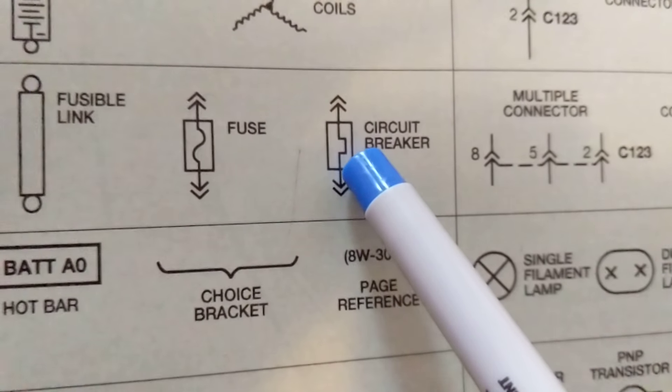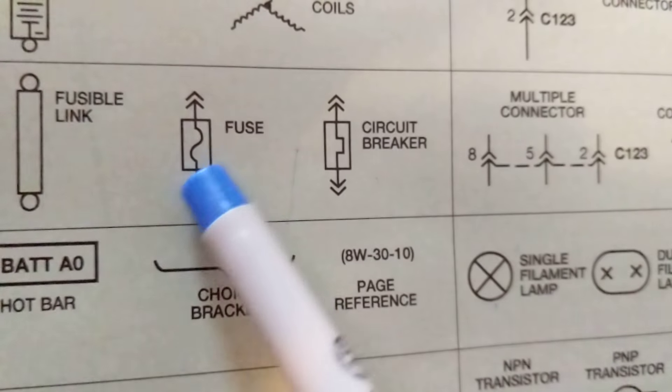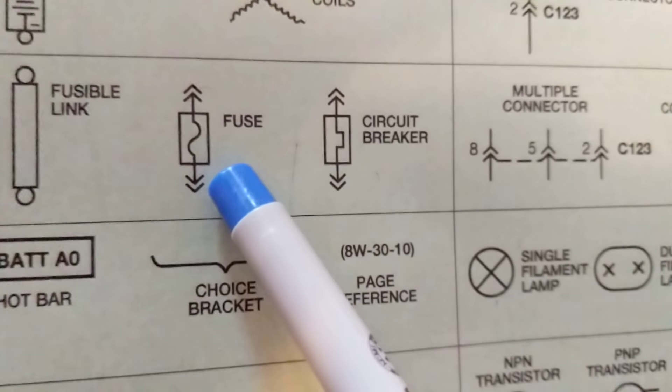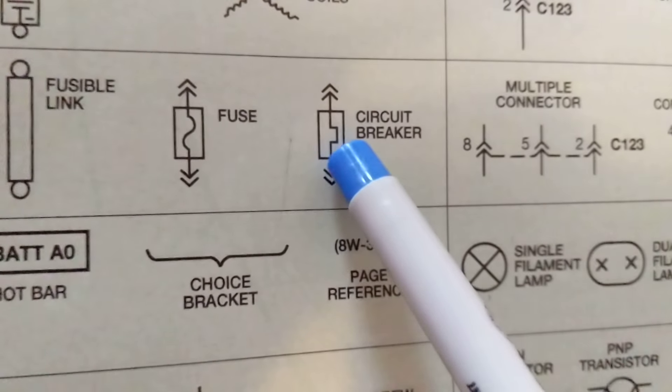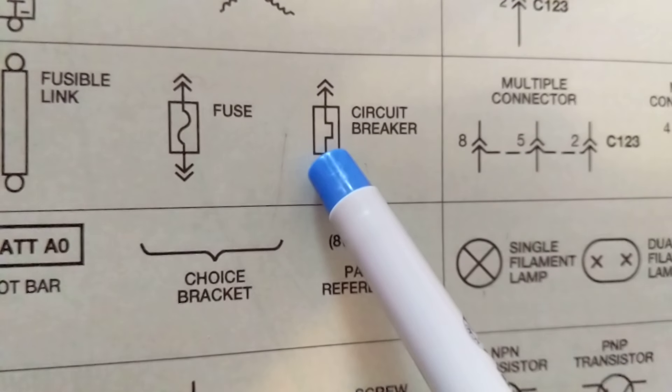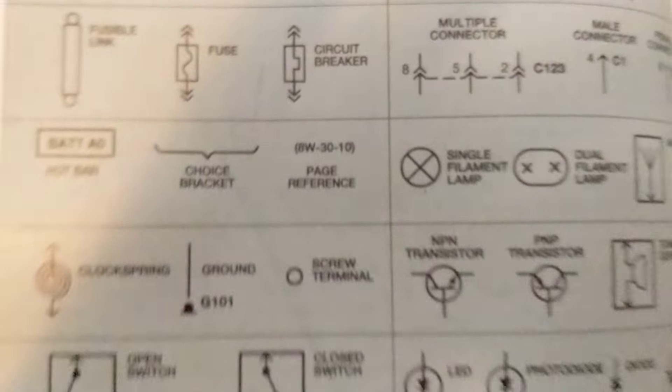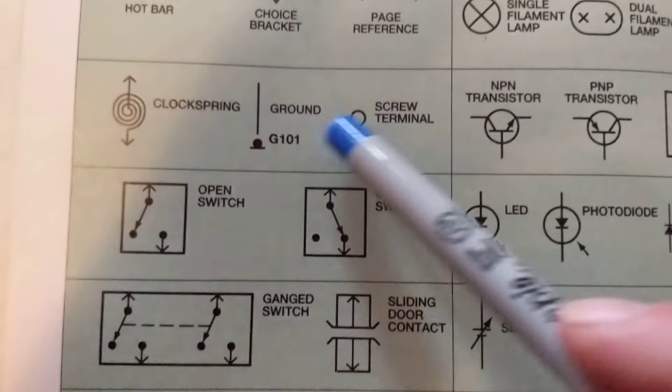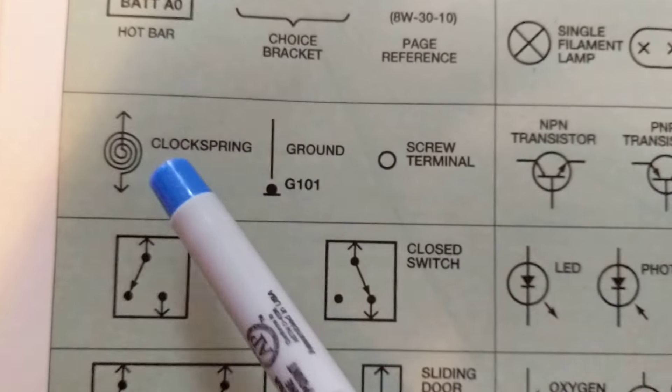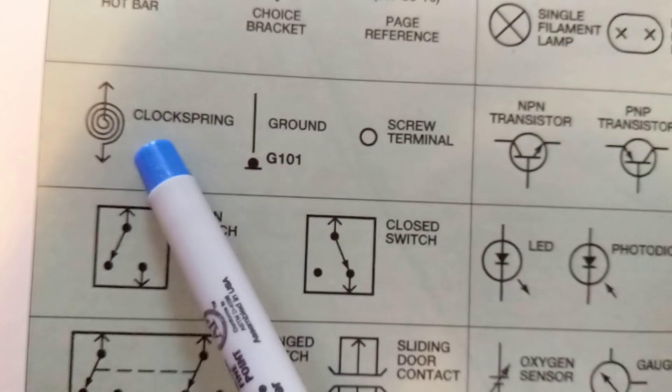And this is a circuit breaker. A fuse once it blows that's it, it goes. Circuit breaker can be reset to be active again in the circuit. So these are the different types. Clock spring, we find it in the steering wheel for the horn circuit.